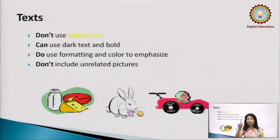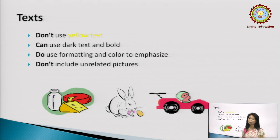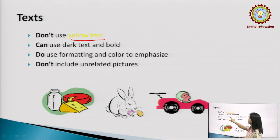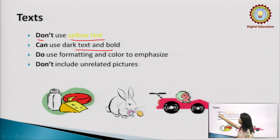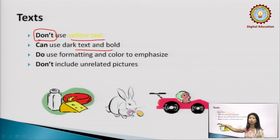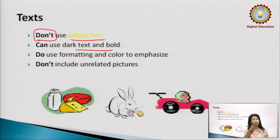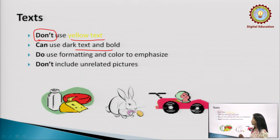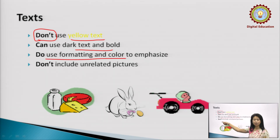Regarding text: never ever use yellow — it is almost invisible. You can use dark text and bold to highlight. We have highlighted 'Don't' and 'Can' and 'Do' so that you can notice them separately — what we can do, what we should do, or what we should not do. Do use formatting and color to emphasize, like the way we have demonstrated here.